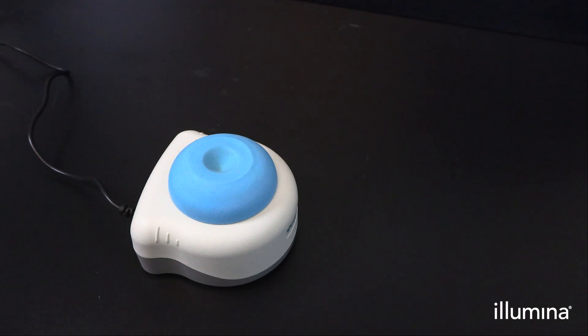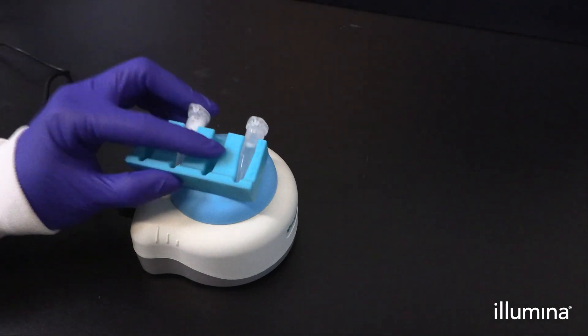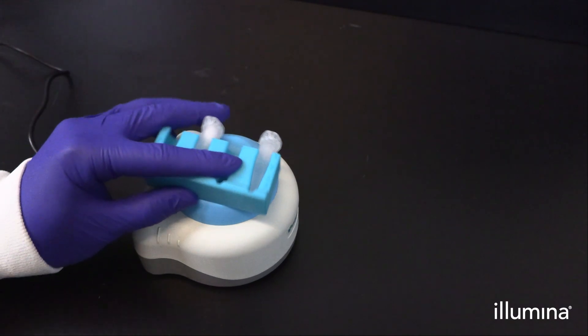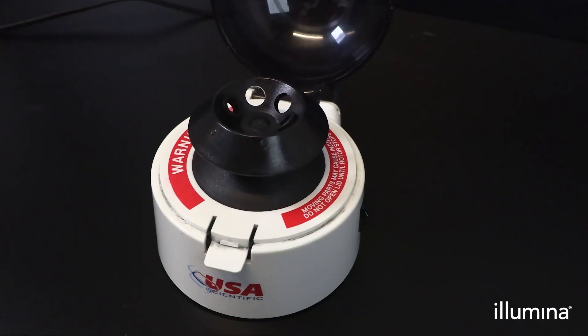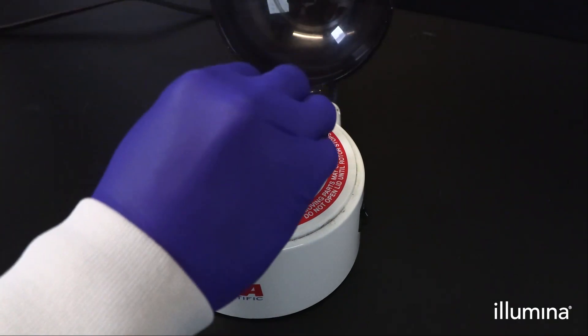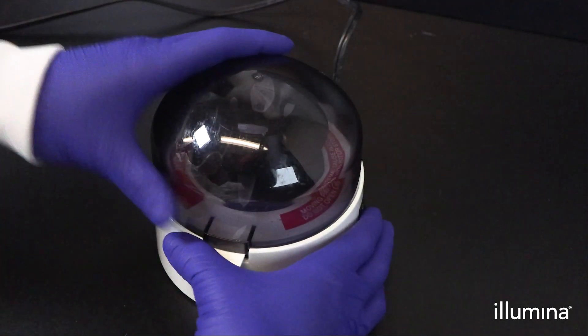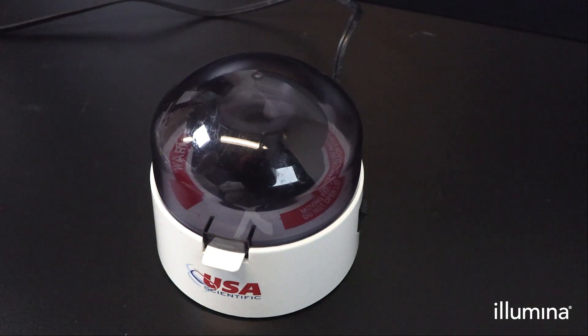Vortex mix pips using the blue 1.5 mil tube stand by holding the stand horizontally on a flathead vortex mixer for three seconds. Centrifuge the 1.5 mil tubes of wash pips for one minute on a benchtop minifuge. Gently place the 1.5 mil tubes of wash pips into the 1.5 mil stand to aid in supernatant removal.